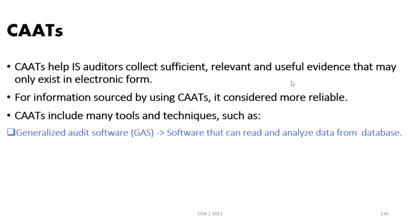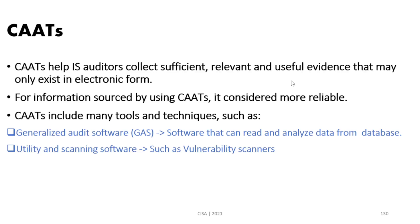Generalized audit software (GAS) is a kind of software that can directly read and analyze data from various database platforms. We also have utility and scanning software, which is another kind of computer assisted audit tool. One form of scanning utility is vulnerability scanning. As an auditor testing the security of a system, you may use a vulnerability scanning tool to identify if the patch management process is well developed.